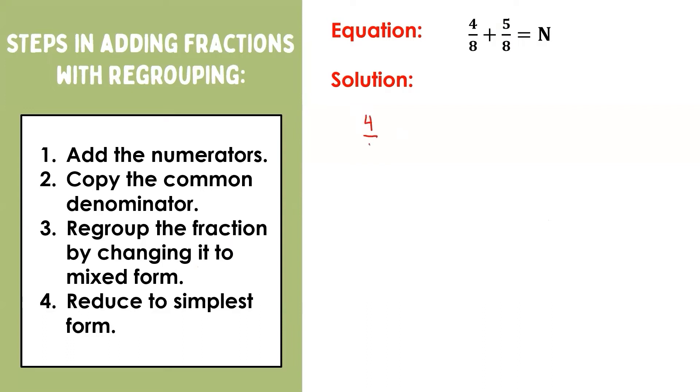Remember, in adding similar fractions, we add the numerators and copy the common denominator. So, four plus five equals nine, then copy eight. As you can see, our answer is an improper fraction, so we regroup it by changing it into a mixed number.